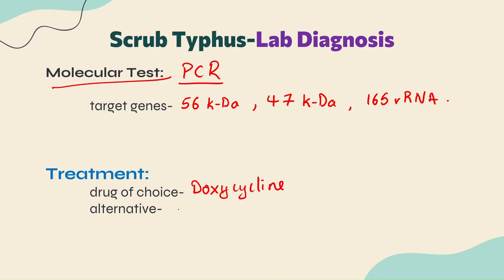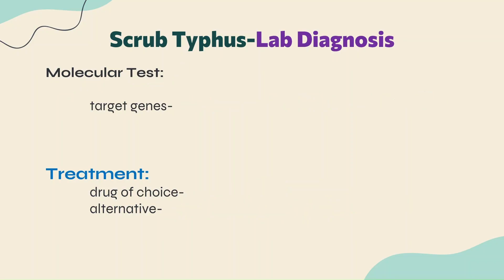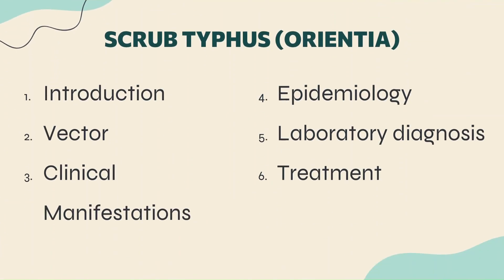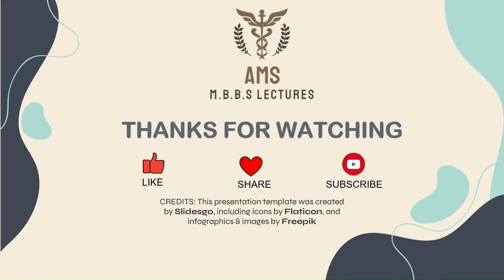Alternatively, chloramphenicol or azithromycin can be given. That marks the end of the topic — Scrub Typhus, also known as Orientia. If you found this content useful, do like, share, and subscribe to the channel. Comment any questions below. See you in the next one.